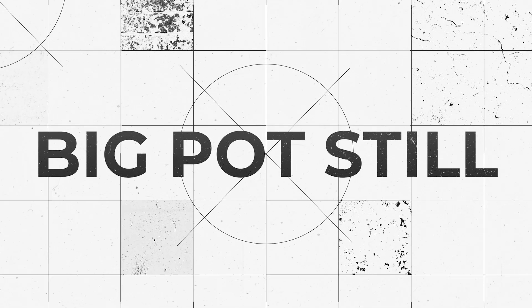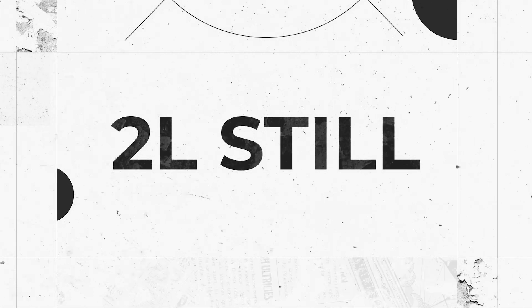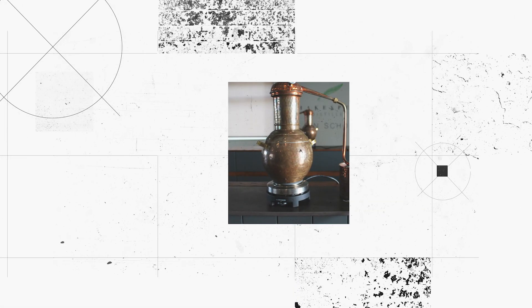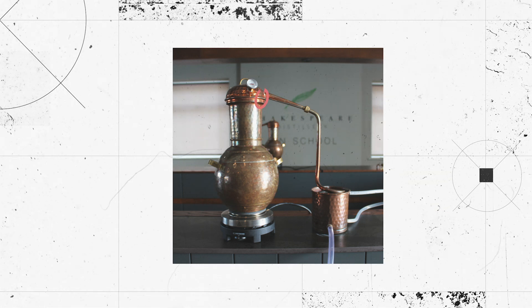Now we talked about the main parts of a big pot still, but we can see a lot of these same parts in a smaller 2L still as well. Here you can see the pot, head, neck, and lyne arm of a still.